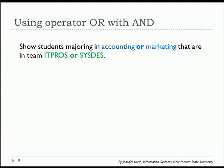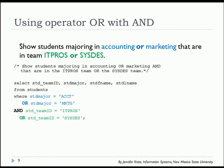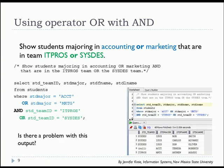Now let's do a combination using OR with AND. Let's show students majoring in accounting or marketing who are in team IT pros or system designs. Here is our SQL: we list our columns in the SELECT clause, the table in the FROM clause, then WHERE student major equals accounting or student major equals marketing and student team ID equals IT pros or team ID equals systems design. Looking at the output, we're actually seeing students who aren't in accounting or marketing, and who aren't in IT pros or systems design. So there's a problem with our output — this is a common issue when using the OR operator in conjunction with other logical operators.